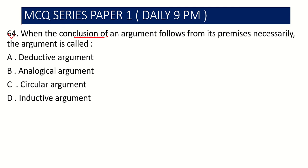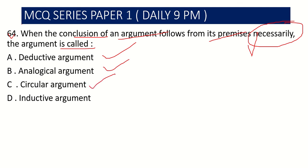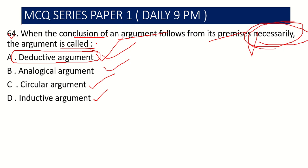Question number 64: When the conclusion of an argument follows its premises necessarily, the argument is called — please focus on the word 'necessarily.' Option A: deductive argument, Option B: analogical argument, Option C: circular argument, Option D: inductive argument. If you see the word 'necessarily,' that points to a deductive argument, so Option A is the correct answer.